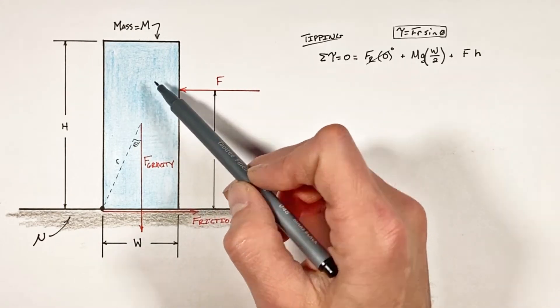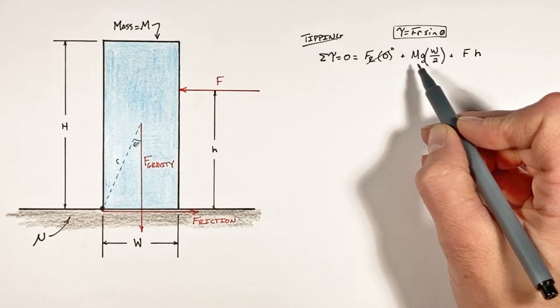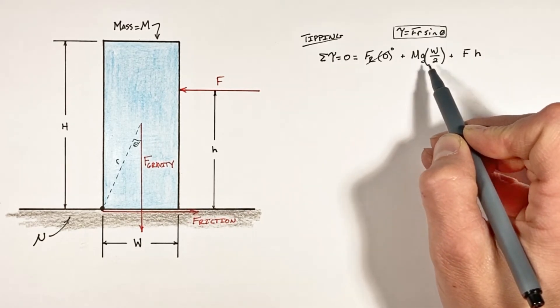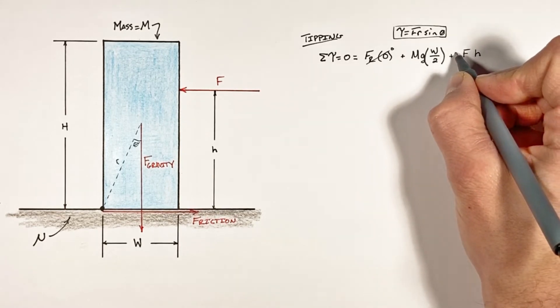And so when we're talking about torques, we need to be careful with signs. If we're saying clockwise for this term is positive, that means the force or push force is going to be in the negative direction.